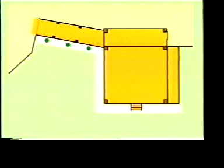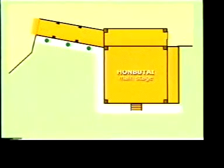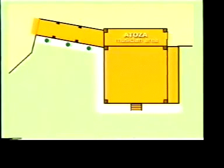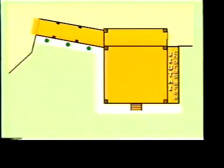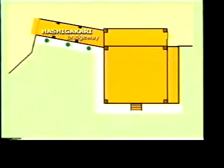The Noh stage has a fixed structure divided into four parts. The honbutai is where the main action of the play occurs. The atoza is where the four musicians sit. The jiutai area is where the chorus kneels in rows. The hashigakari is the bridgeway leading off stage.